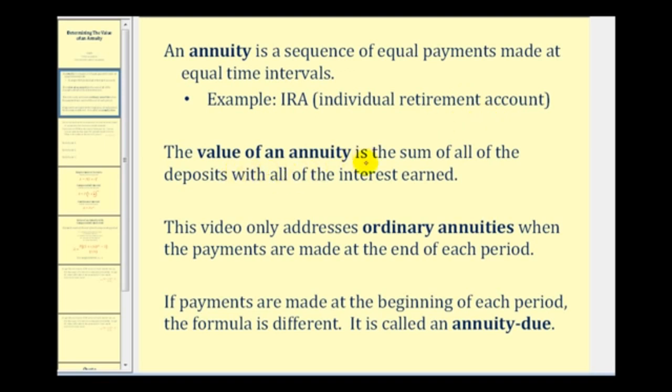The value of an annuity is the sum of all of the deposits with all the interest earned. This video will only address ordinary annuities when the payments are made at the end of each period. If payments are made at the beginning of each period, the formula would be different and is called an annuity due.